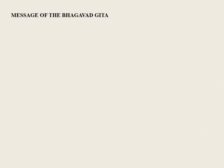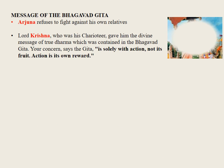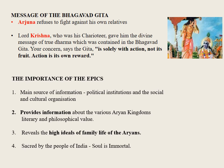Message of the Bhagavad Gita: Arjuna had refused to fight against his own relatives, but Lord Krishna, who was his charioteer, gave him the divine message of true Dharma contained in the Bhagavad Gita. The Gita says: 'Your concern is solely with action, not its fruit. Action is its own reward.' In the battle that lasted 18 days, all the Kaurava brothers were killed, and Yudhishthira became the king of Hastinapur.